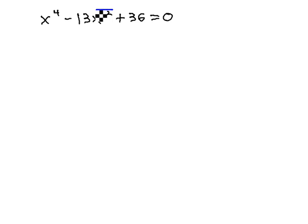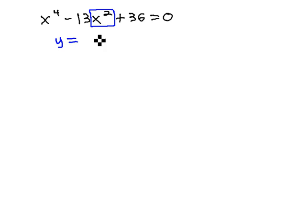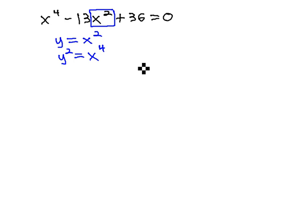And if that's the case, what we're going to do is grab that middle part with the exponent — the x squared — and introduce a new variable, maybe call it y, and make it equal to that piece. The advantage is when we square both sides, we end up with y squared equal to x to the 4th, since squaring doubles the exponent, which is that other part.